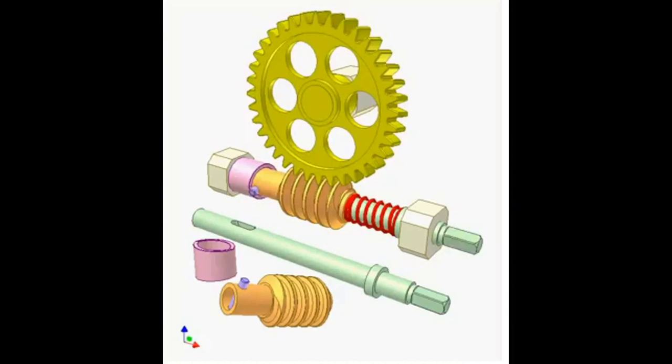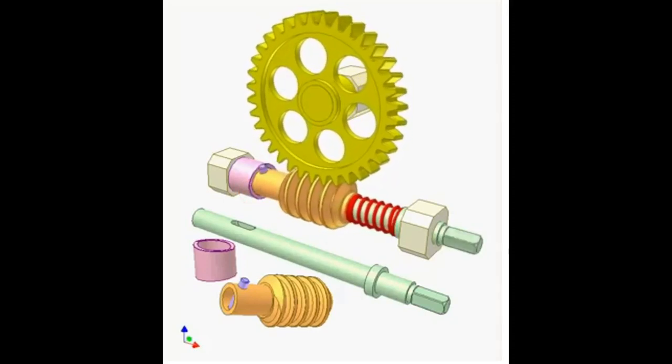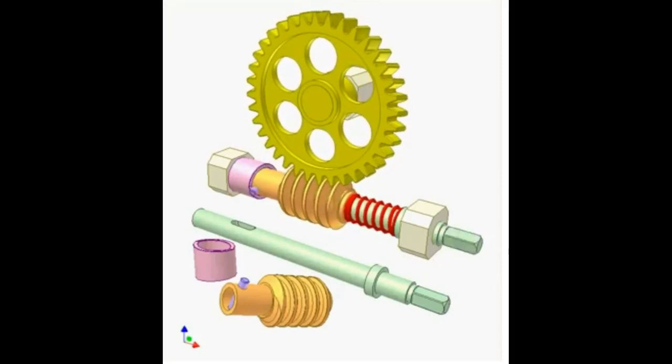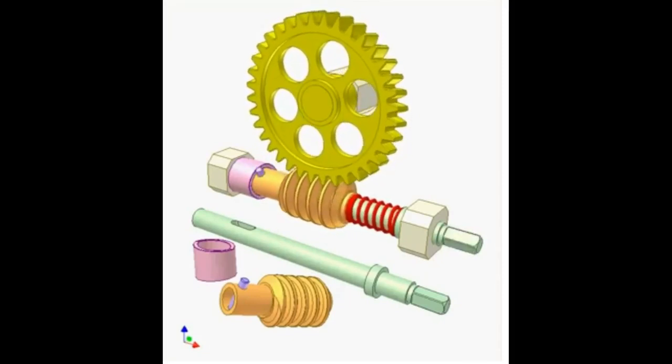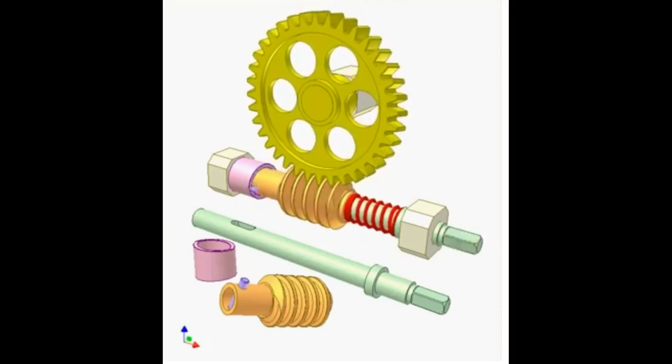One full rotation of the worm will move the worm gear by one tooth. Watch this pin as it makes one full turn while the gear moves only one tooth at a time. This can lead to large ratios like 20 to 1 or more, which means that a large torque is produced on the shaft of the worm gear. That is, the twisting or rotating force on the shaft is large, which means this system can lift heavy loads or turn heavy items.